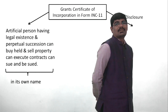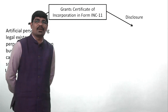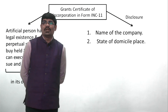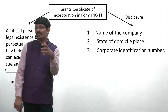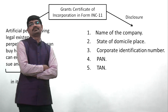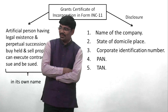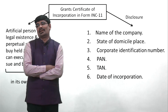Certain things are disclosed in the Certificate of Incorporation (Form INC-11): the company's name, the state in which it is registered, the Corporate Identification Number (CIN), PAN — Permanent Account Number — and TAN, and the date from which the company is incorporated.